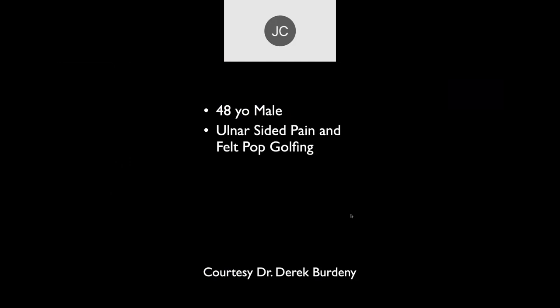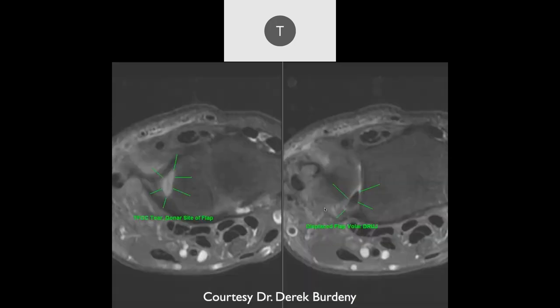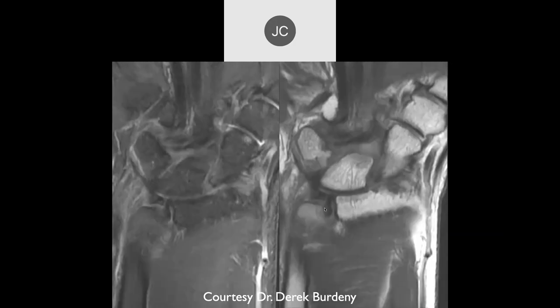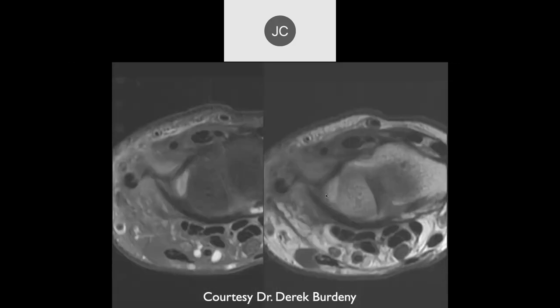Taysen: 48-year-old male, ulnar-sided pain and felt a pop golfing. It looks like there's a flap — like a central perforation as well. We can see it on other images with some displacement of the TFC. Here we can see a much larger defect in the body where that central part of the body has flipped over into that flap.